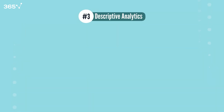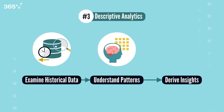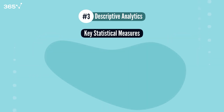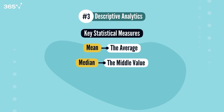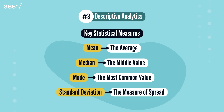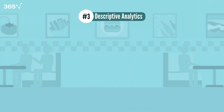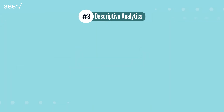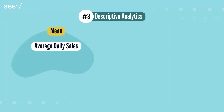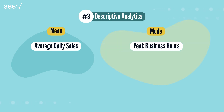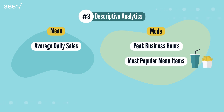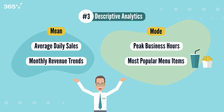Concept 3: Descriptive Analytics. Descriptive analytics involves examining historical data to understand patterns and derive insights. We use key statistical measures like mean (the average), median (the middle value), mode (the most common value), and standard deviation (the measure of spread). For example, a restaurant analyzing their data might look at average daily sales using mean, peak business hours using mode to find the most common busy times, the most popular menu items using mode for customer favorites, or monthly revenue trends — looking at averages and how much numbers spread out to understand patterns.